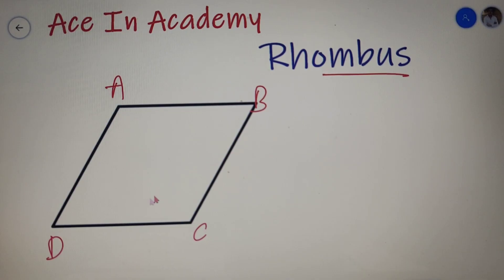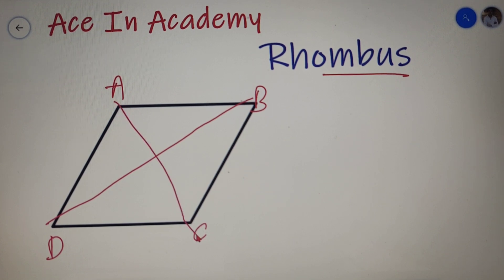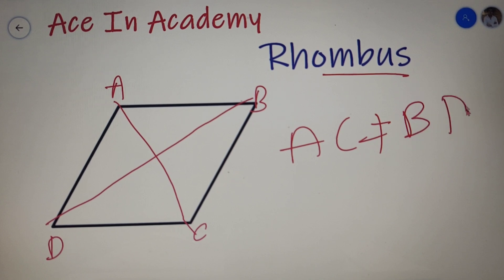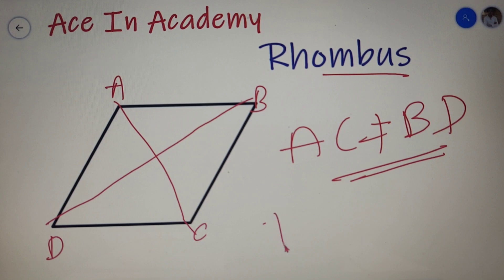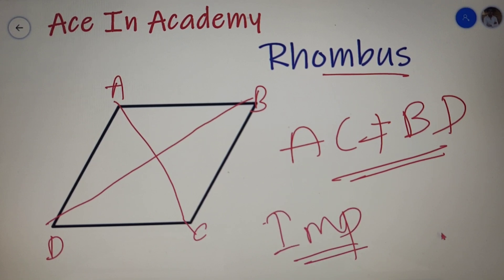The third property of a rhombus is that the diagonals of a rhombus are not equal. So I can say that AC is not equal to BD. This is one of the major differences between a rhombus and a square, so it is important to note that the diagonals of a rhombus are not equal.